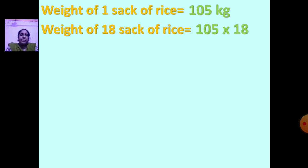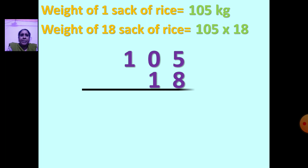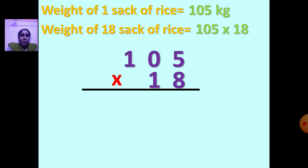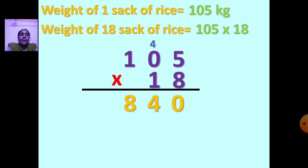Write 105 multiplied by 18. Draw the line, put the sign of multiplication, and start the sum. We start from the units place: 8 multiplied by 5 — 8 fives are 40, so 0 comes down and 4 goes as carry over to the tens place. Now 8 multiplied by 0 — any number multiplied by 0 is 0. 0 plus 4 carry is 4.